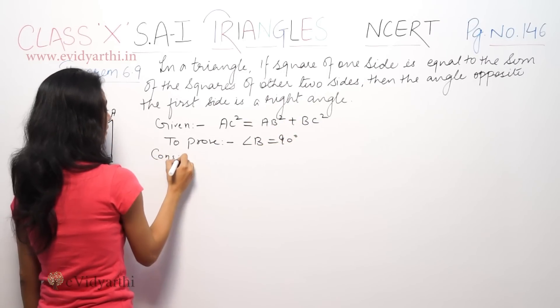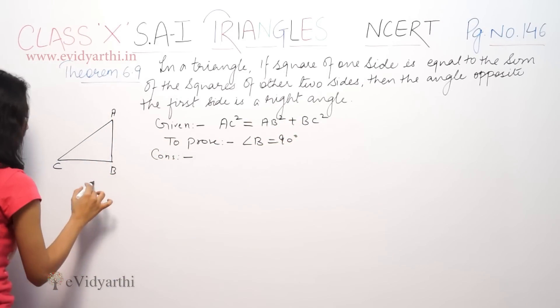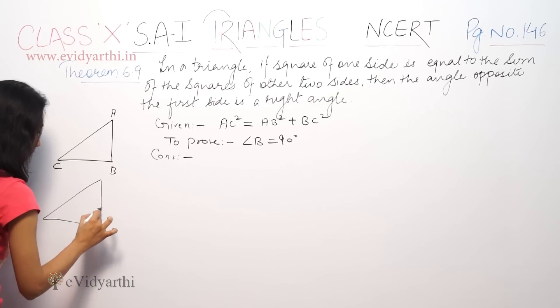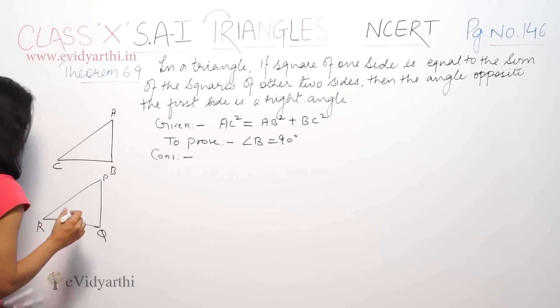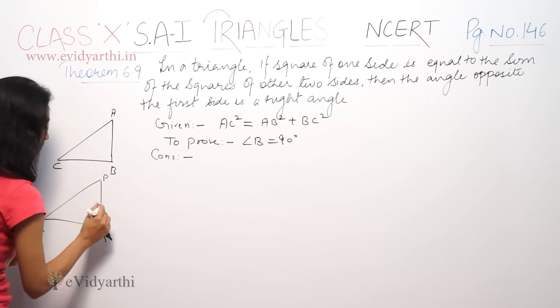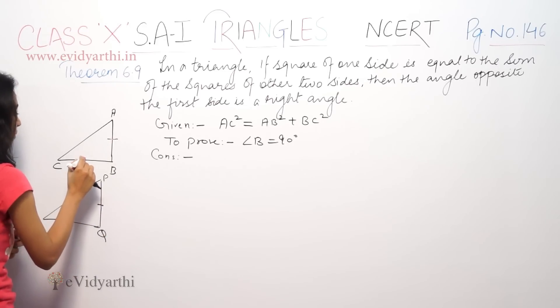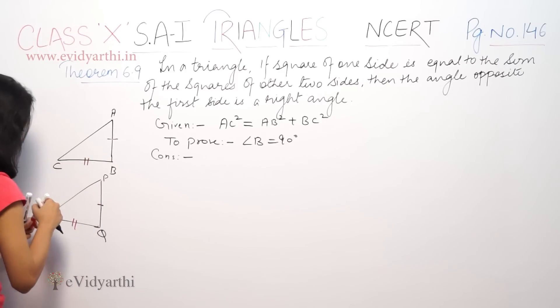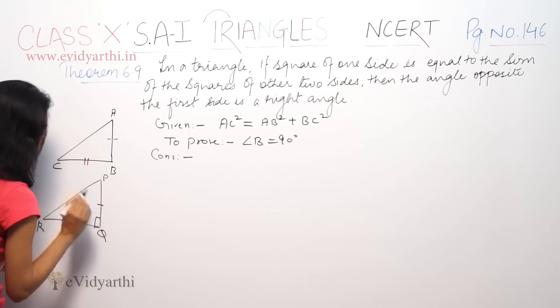Now, for construction, we have to draw a new triangle PQR such that PQ is equal to AB and QR is equal to BC, and angle Q is 90 degrees.